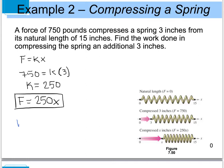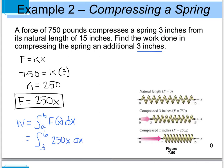Work equals the integral from A to B of F(X) dX. Since the spring is already compressed 3 inches and we want to compress it another 3 inches, we integrate from 3 to 6 of 250X dX. Integrating gives 125X squared, evaluated from 3 to 6.